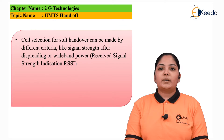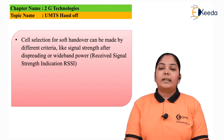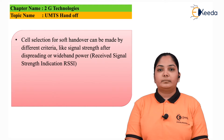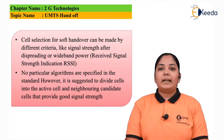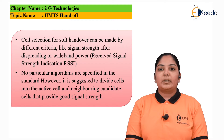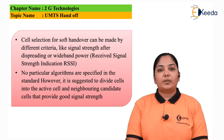Cell selection for soft handoff can be made by different criteria like signal strength or the received signal strength indicator. No particular algorithm is specified in the standard. However, it is suggested that we divide the cells into active cell and neighboring cell candidates. The active cell is where the mobile phone is currently connected, and the neighboring cell candidate is the one to which the mobile phone is going to be handed over, providing good signal strength.